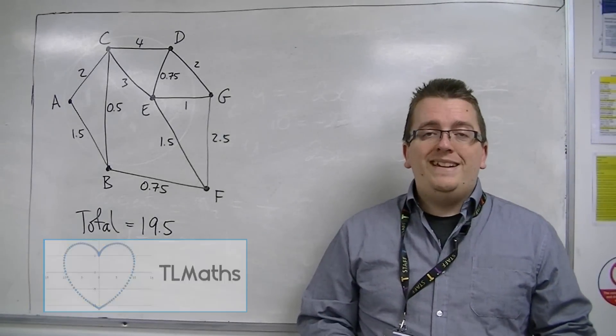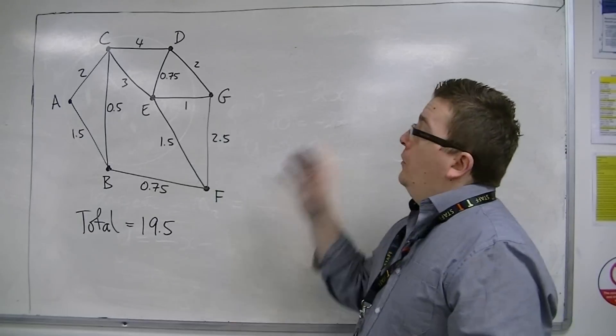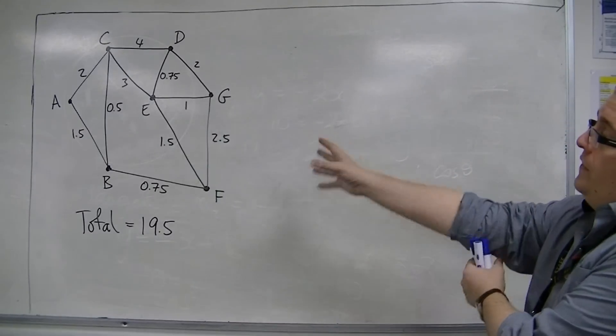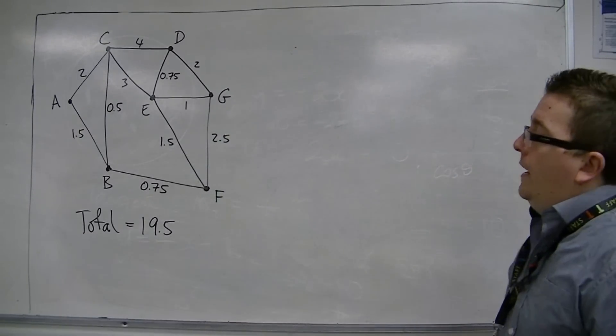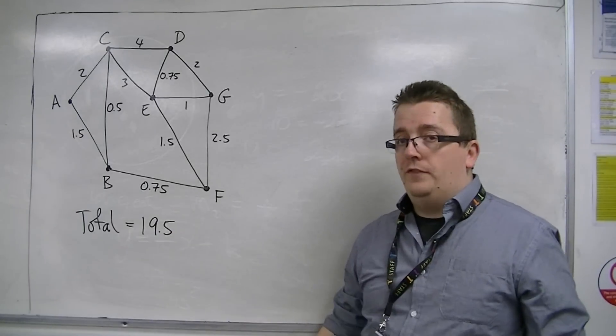So in this video I'm going to give you a second example of using the Chinese Postman algorithm. So here is the graph, the network that I'm going to be working with, and I've already been given that the total of all the edges added together is 19.5.